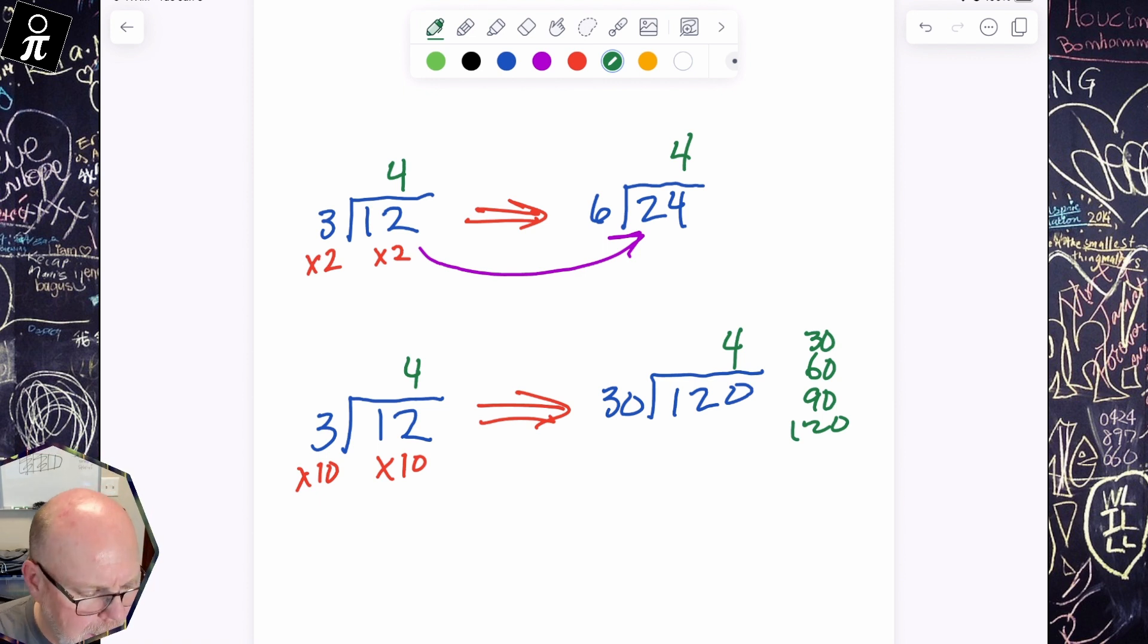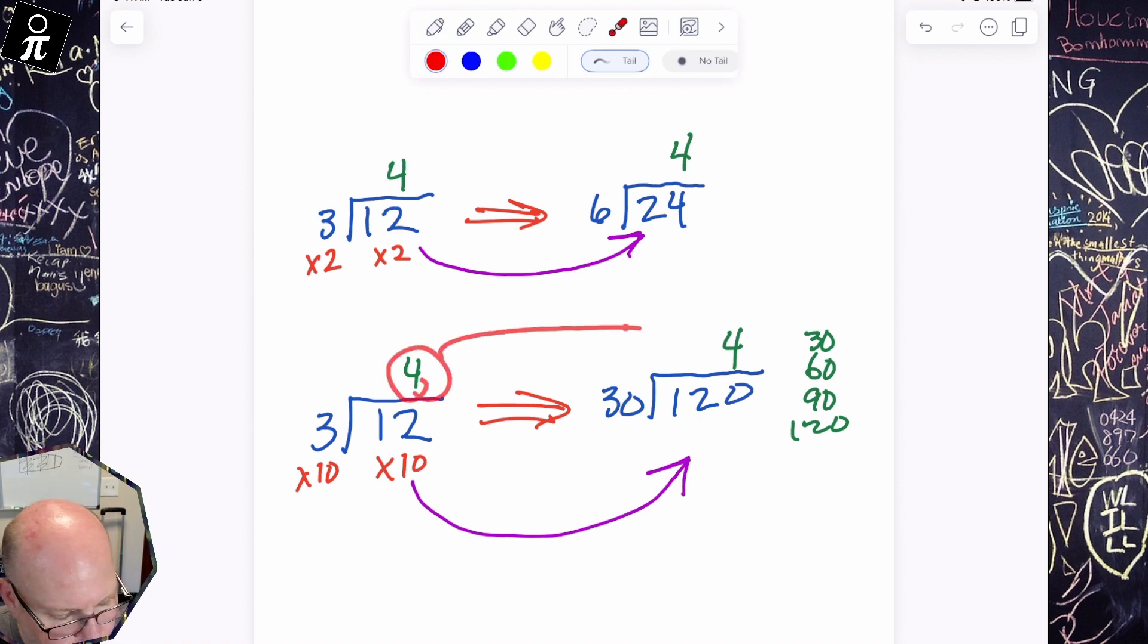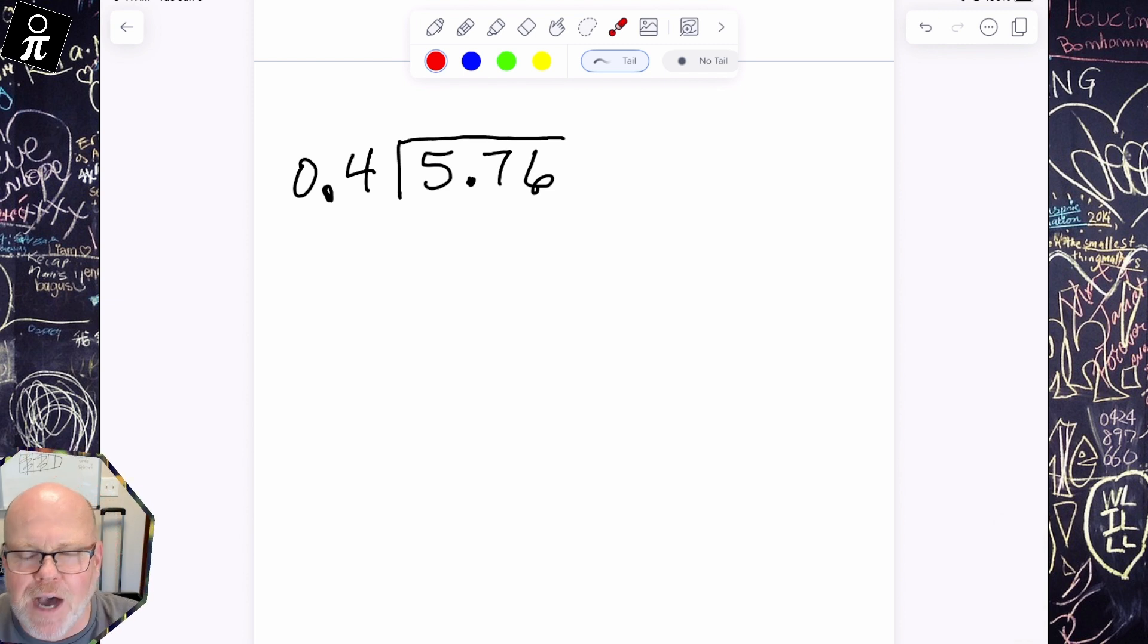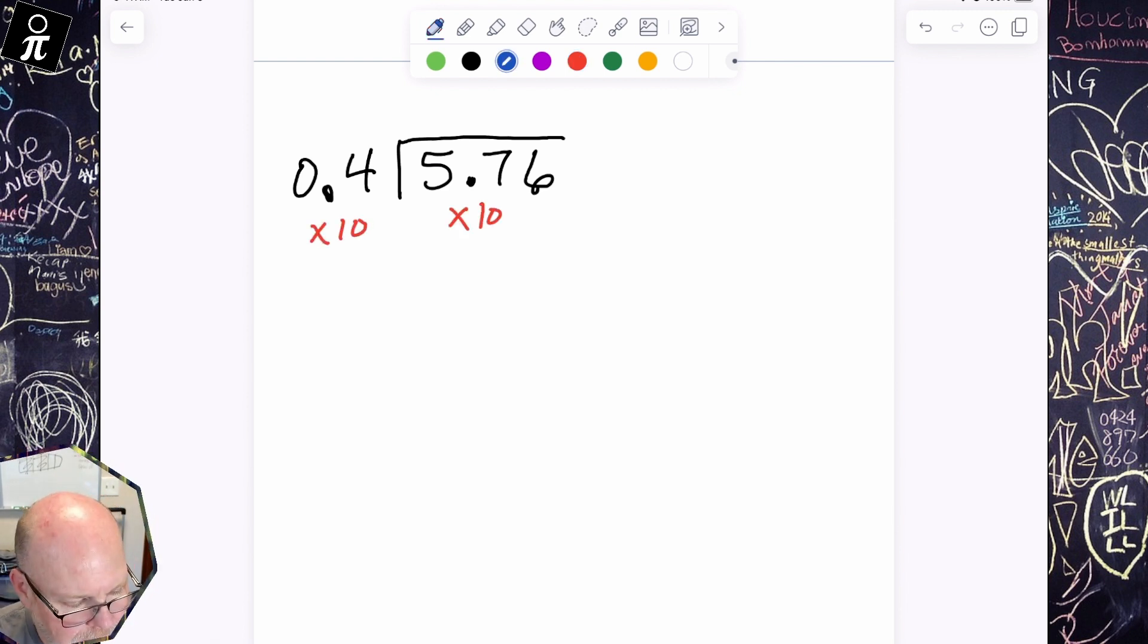So, we can use multiplication to change the original problem into a new problem, but we're doing it knowing that we're still going to get the same answer. There's the key. So, when we finally get to really looking at 5.76 divided by 0.4, cutting something into 0.4 equal groups doesn't make sense. But, we've learned that we can multiply both of these numbers by 10, and that's going to give us 4 into 57.6.